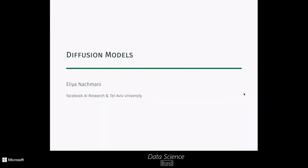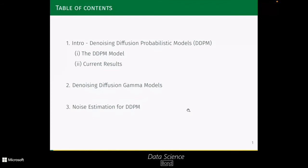My name is Elian of Money and I'm from Facebook Research and Tel Aviv University. Today I'm going to talk about diffusion models. The first part is an introduction to Denoising Diffusion Probabilistic Models (DDPM). The second part will be about our work on Denoising Diffusion Gamma Models, showing how we can convert the original diffusion models that use Gaussian noise into a gamma distribution noise. The last part will be about noise estimation for DDPM, another paper we published that shows how we can accelerate the inference time of diffusion models.